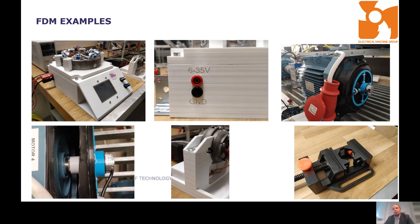Sheet lamination or laminated object manufacturing works similarly to how electrical machines are traditionally produced — we have, for example, electrical steel sheet, but instead of stamping it's cut with a laser to the required shape, and then a heat roller glues the layers together. The drawback is that it does not allow us to produce very complex designs, it is not possible to produce hollow parts, and it is good mainly for producing large inexpensive objects. For producing electrical machines it is not a very good solution.